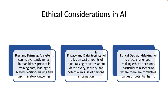The next area, which gets a lot of press, is ethical considerations in AI. The first area is bias and fairness. AI systems can inadvertently reflect human biases present in training data, leading to biased decision-making and discriminatory outcomes. You really need to watch the type of data that an AI system is trained on and what kind of cleansing has been done on that data to prevent bias.